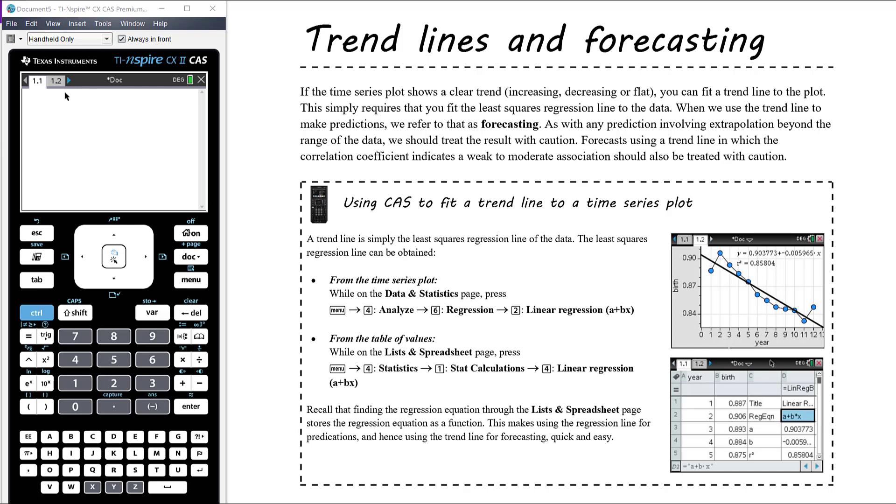This simply requires that we fit a least squares regression line. When we use that trend line or least squares regression line to make predictions, when it's time series data, we refer to that as forecasting rather than predicting, although it's essentially the same thing. As with any prediction involving extrapolation beyond the range of the data, we need to treat that prediction with caution if we're extrapolating, and forecasts using a trend line in which the correlation coefficient indicates weak to moderate association should also be treated with caution.